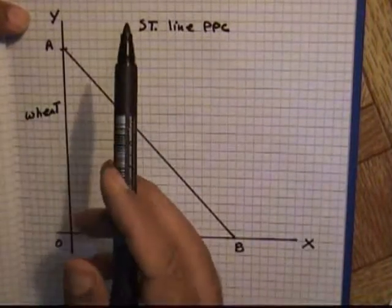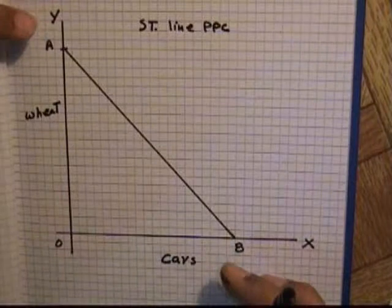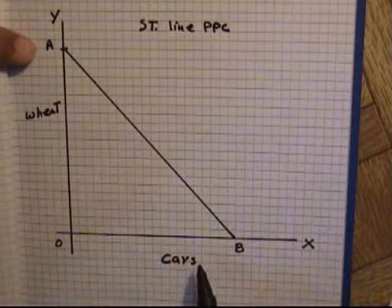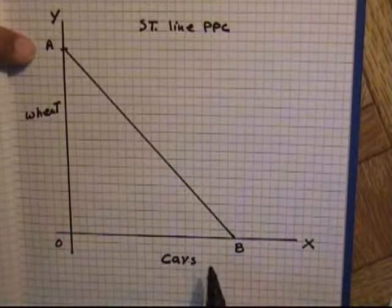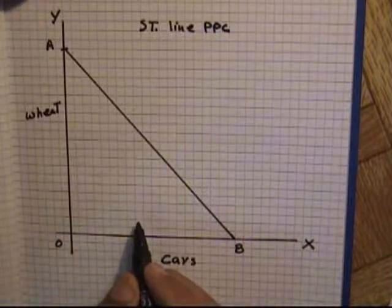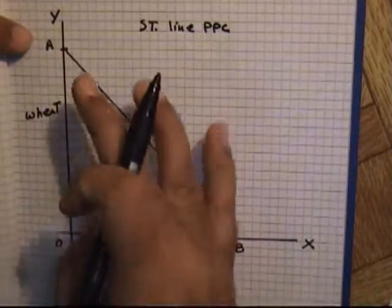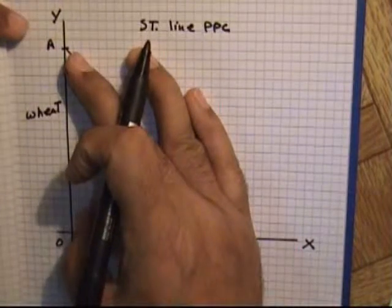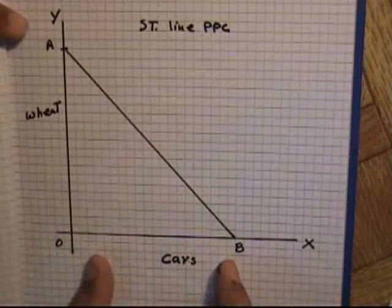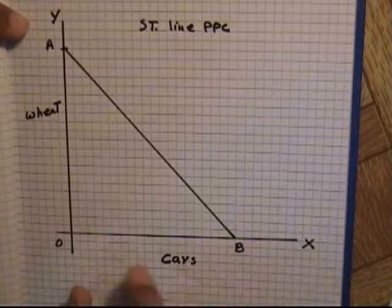This line shows the maximum production this country can produce for wheat and cars. If all resources — land, labor, capital, and enterprise — are engaged in the production of wheat, then total wheat production equals the distance OA. And if all resources are engaged in the production of cars, then total car production could be OB.